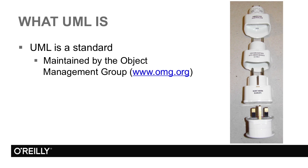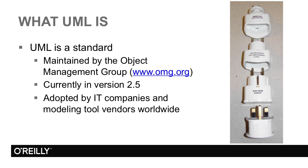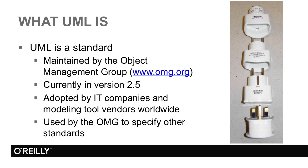It's maintained by the Object Management Group, which also maintains a number of other standards, such as CORBA and BPMN. At the time of recording this course, the current version is 2.5. The most significant change between 2.4 and 2.5 related to a restructuring of the specification from two documents into one. As a standard, it's been adopted by IT companies and tool vendors worldwide, and it's also used by the OMG to specify other standards. The UML standard is itself specified in UML.